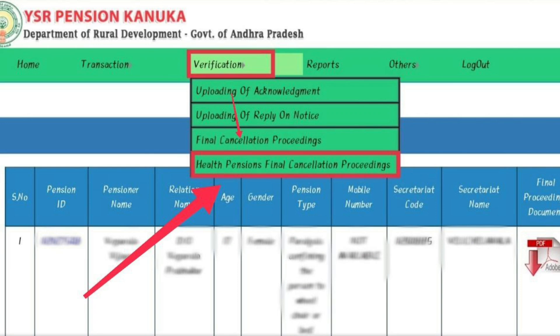Now, you will be looking at the screen. We will see the verification of the care and the cancellation proceedings for the health pension. Click on the button and we will see the proceedings on the reason and so on. This is the Pensions page.